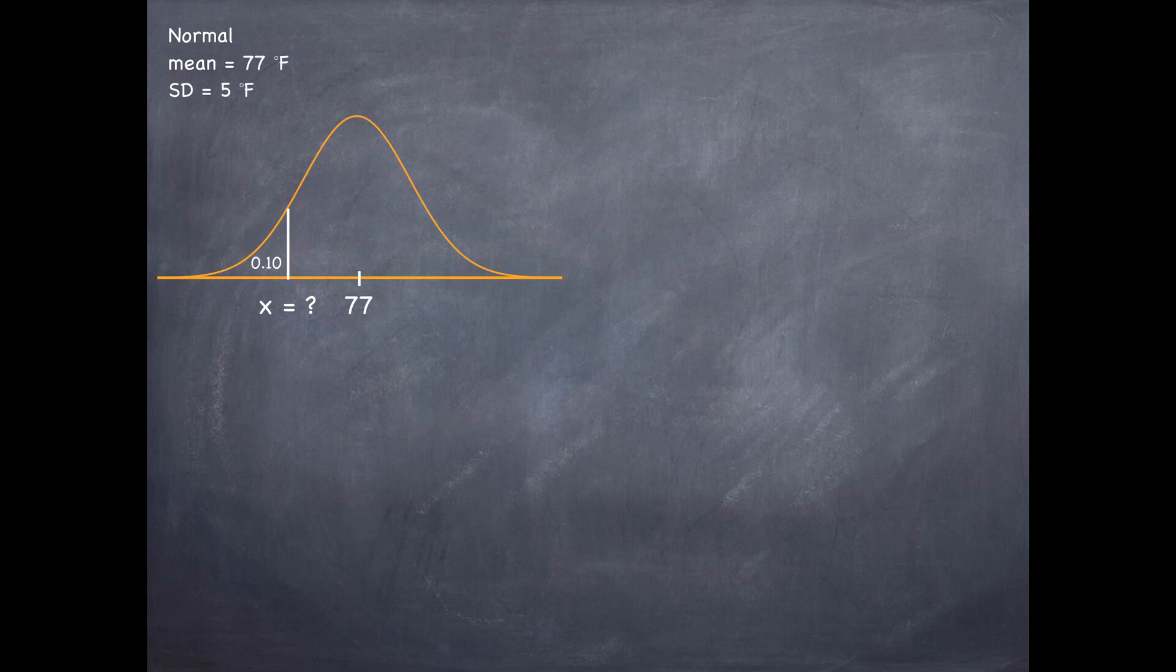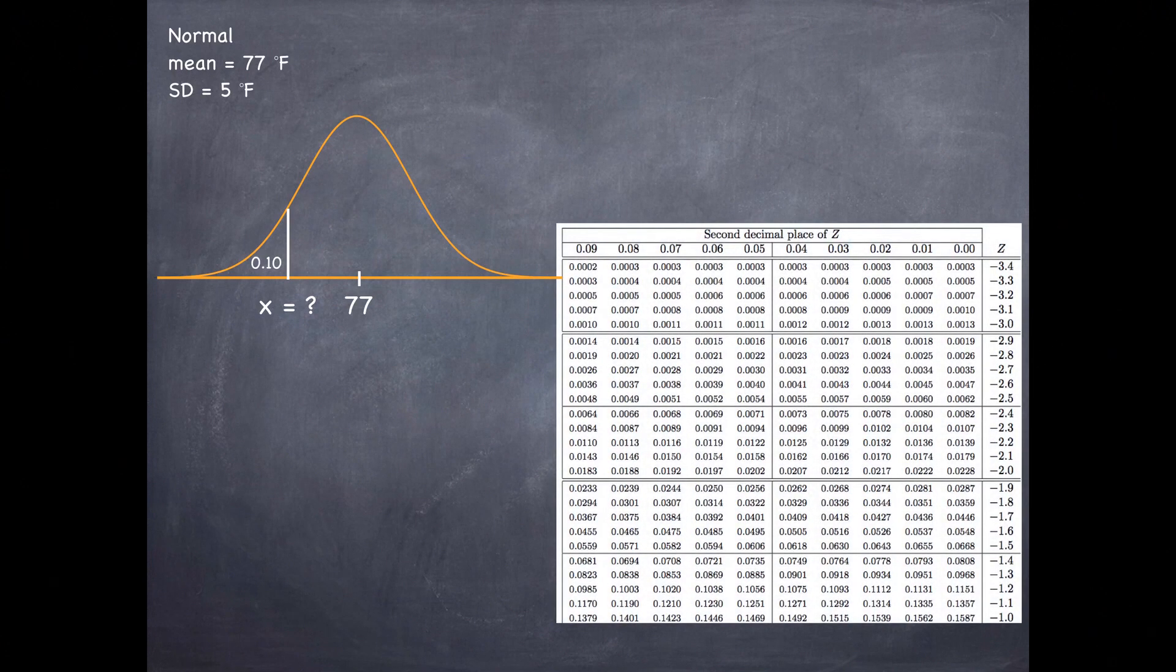So let's bring up a normal probability table and let's try to locate the z-score corresponding to the tenth percentile.